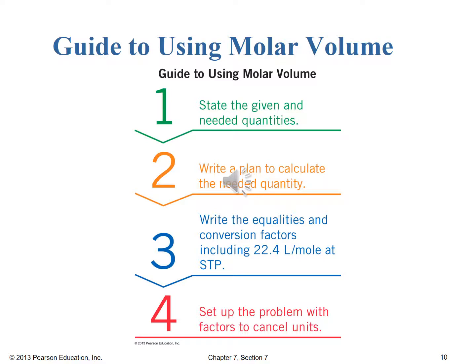Let's look at a new guide. There's one more step here than what we've been dealing with if we're going to use molar volume. First, state the given and needed quantities and analyze the problem. Second, write a plan to calculate the needed quantity — what the question asks for. Third, write the equalities and conversion factors, now including the idea of 22.4 liters equal to one mole if we happen to be at STP. And finally, set up the problem with the factors to cancel the units and arrive at the numerical answer.